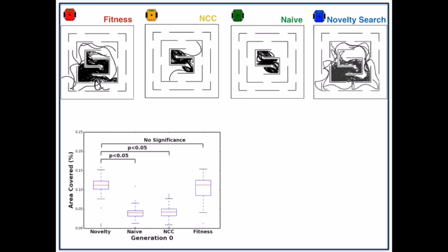Now the box plot on the lower left shows the percent area covered for all four treatments. We can see that novelty search covers the larger area when compared to naive and NCC, which are the random controls.